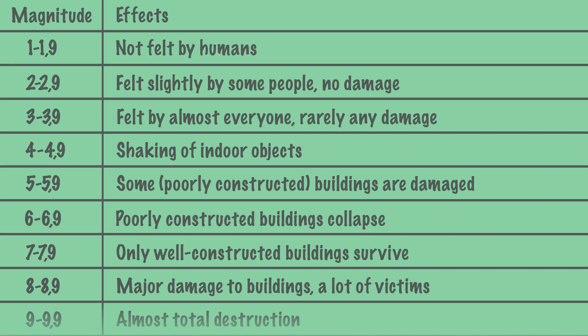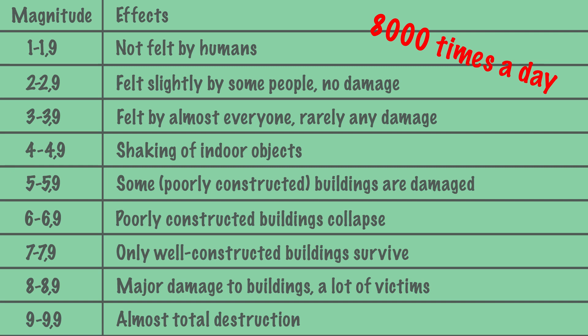The heavier an earthquake, the less often it occurs. For example, the lightest earthquakes occur 8,000 times a day, while the strongest earthquakes occur about once every 20 years.